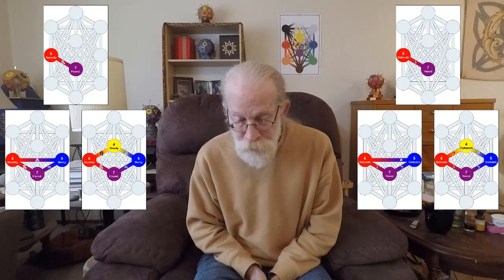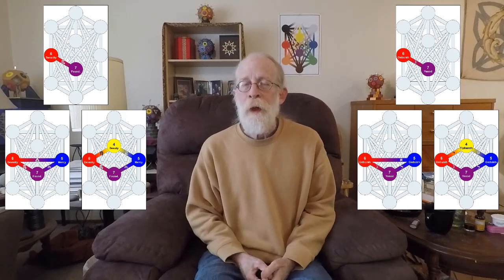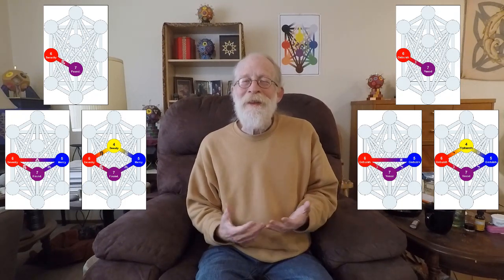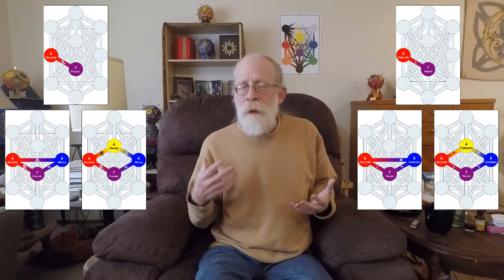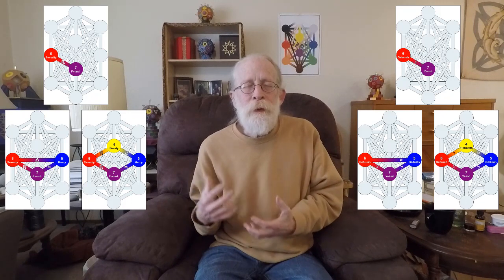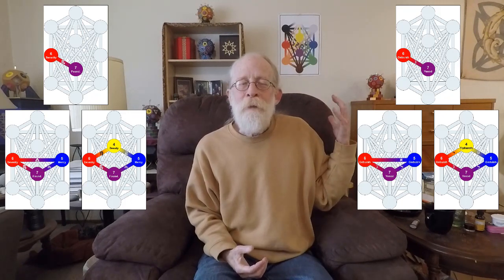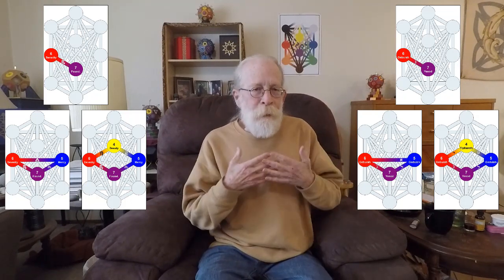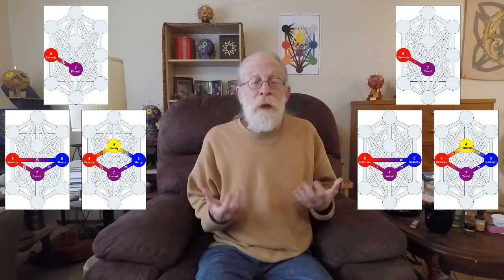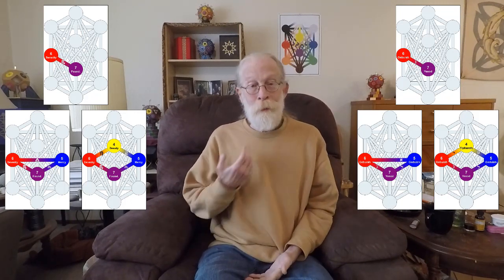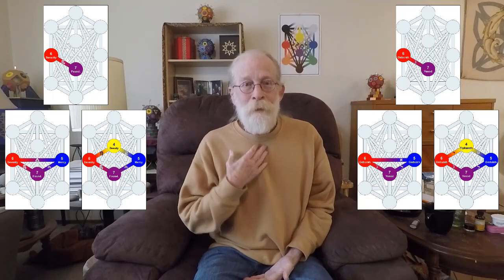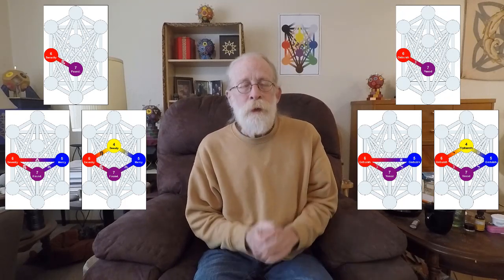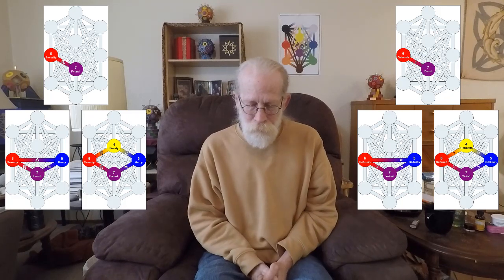So our first three gates are the one linear gate of that path of Nun, a triangular gate which integrates the Geburah to Yesod with the Gedula to Yesod, it balances them out via the path of Aleph, and then there is a quadrangle which incorporates the solitary self of Tiferet and the whole thing together. So these are just the first three gates.